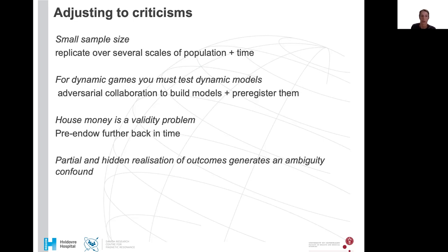People have argued that the partial and hidden realization of outcomes generates an ambiguity confound. So that means after they had made all the decisions, for each decision between the gambles, we never realized them. We never showed which one was actually realized on their wealth. But what we instead did was when they finished the experiment, we randomly realized 10 of the chosen gambles and that might generate an ambiguity confound. So we would like to test a fully transparent realization of every single gamble, but maybe also just test what happens when we only realize one single gamble amongst those that they have chosen.